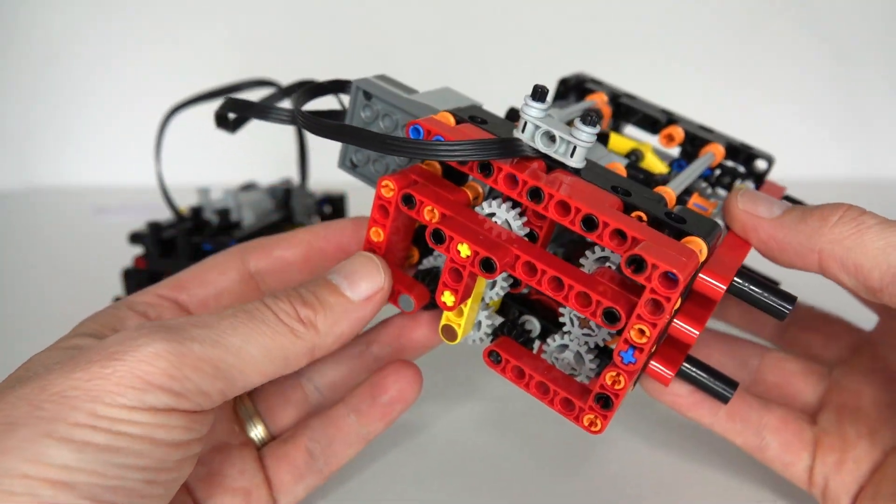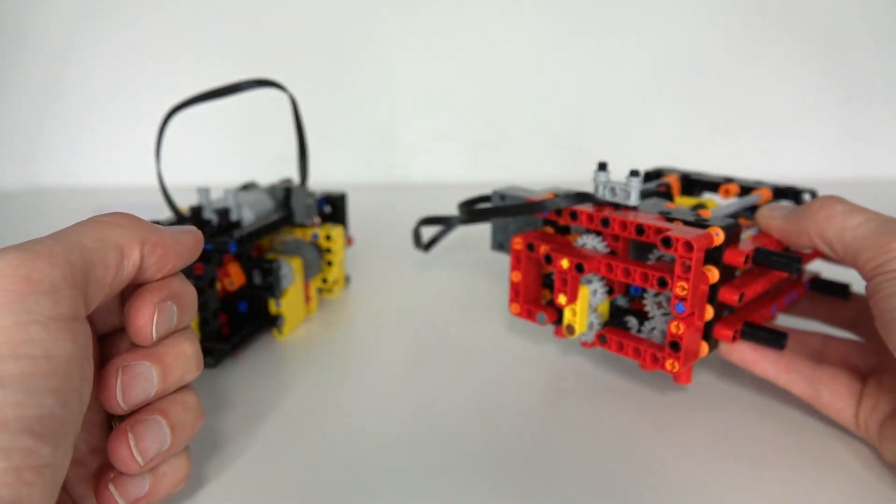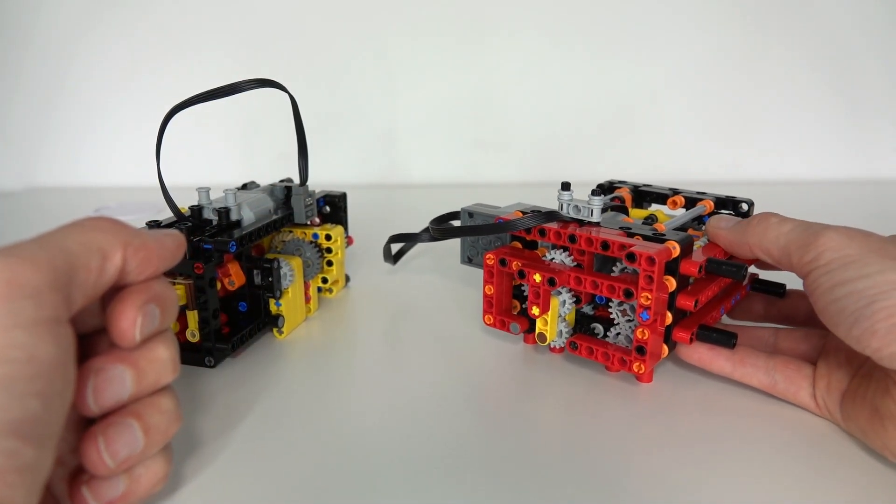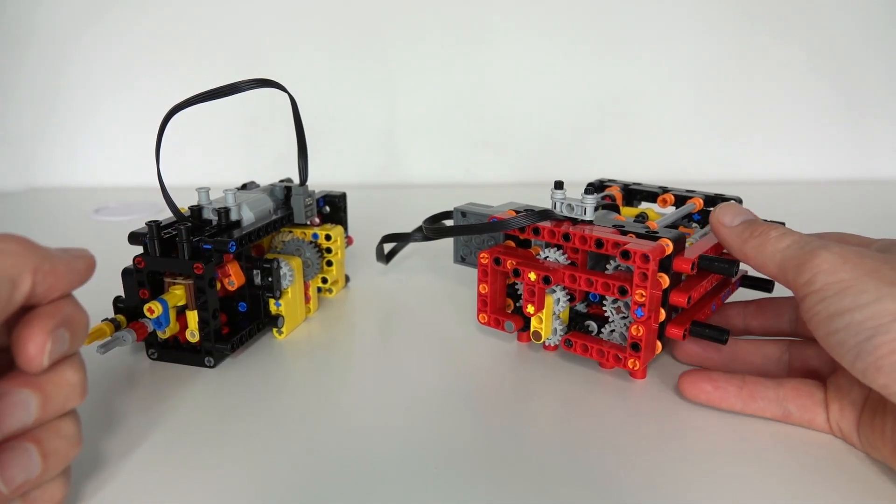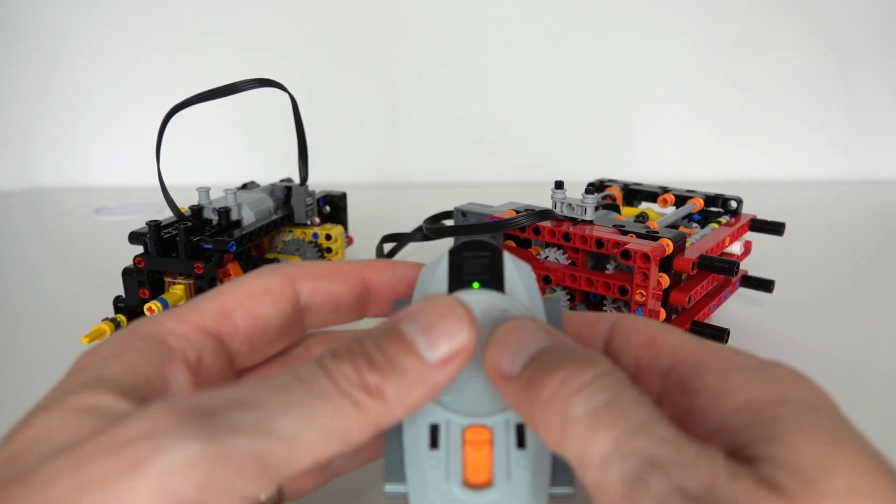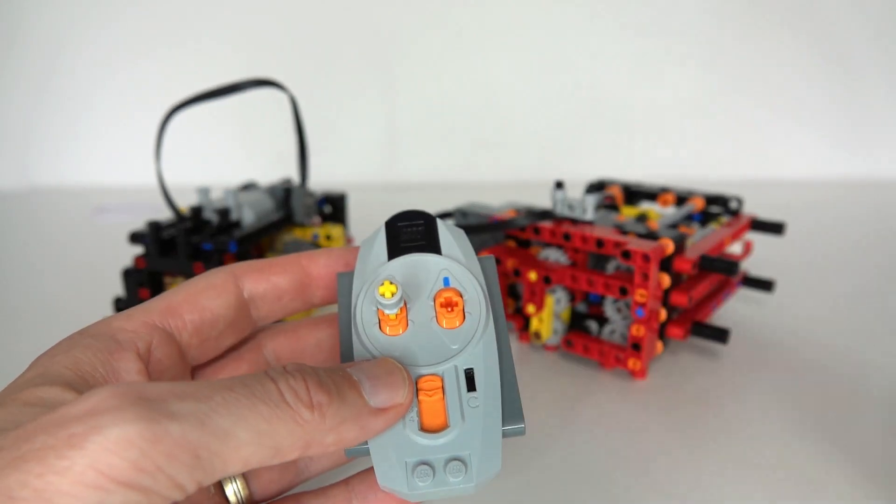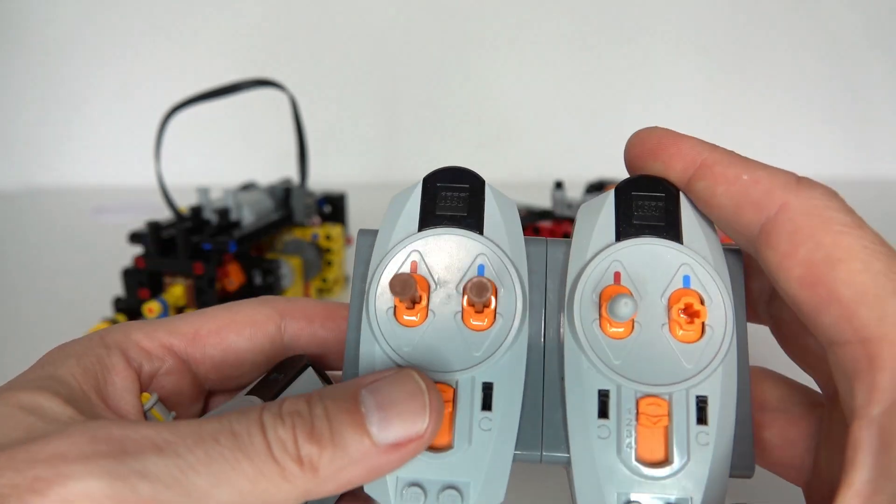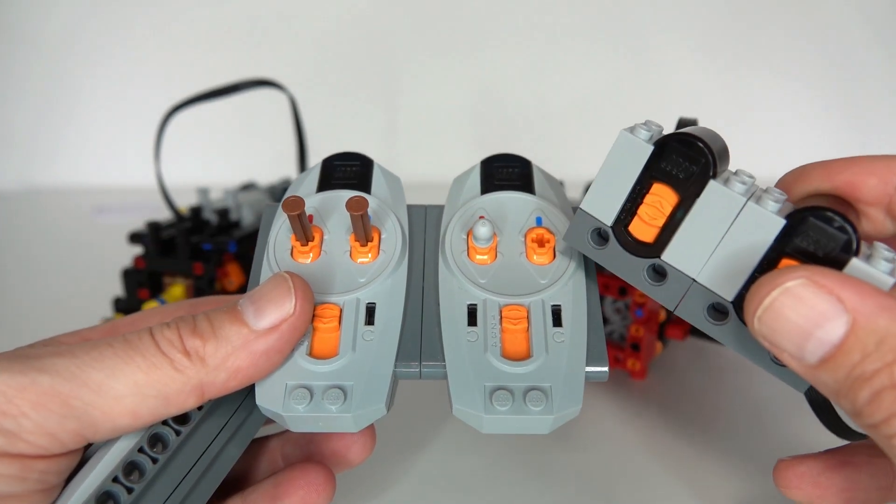There's three different functions, the driving, the steering, and the gear changing, and you're going to need three motors to control those three functions. Because each remote controller is going to control two different motors, you're going to have to have two different transmitters as well as two receivers.